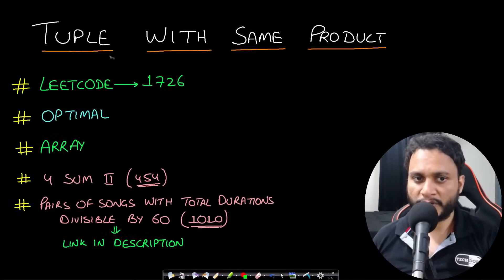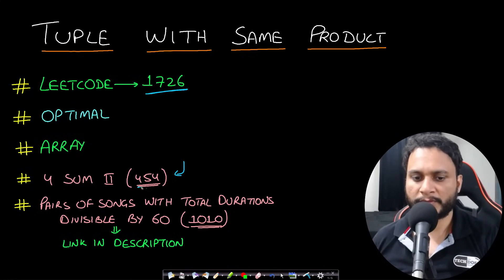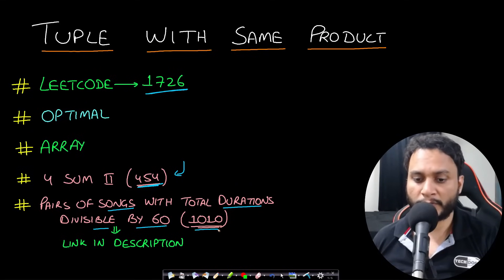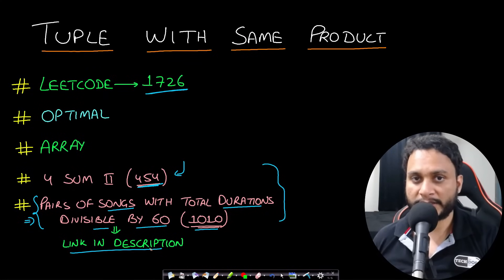Hello guys, welcome back to TechDose. In this video we will look at the Tuple with Same Product problem, which is LeetCode number 1726. After solving this problem, you can consider solving the Four Sum Two problem from LeetCode number 454, and the Pair of Songs with Total Durations Divisible by 60 problem from LeetCode number 1010. Both these problems are kind of similar but not exactly the same. I have already made a video on the second problem, so all relevant links will be in the description below.